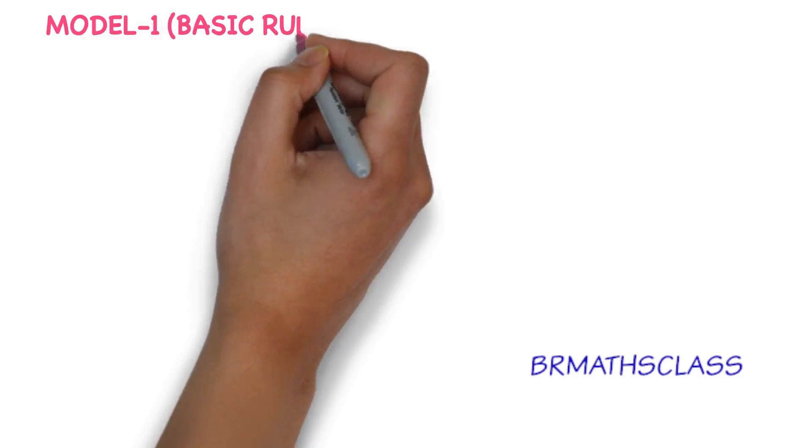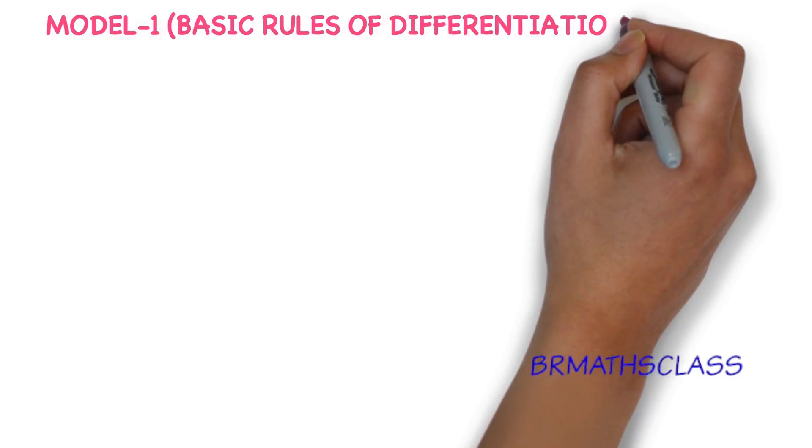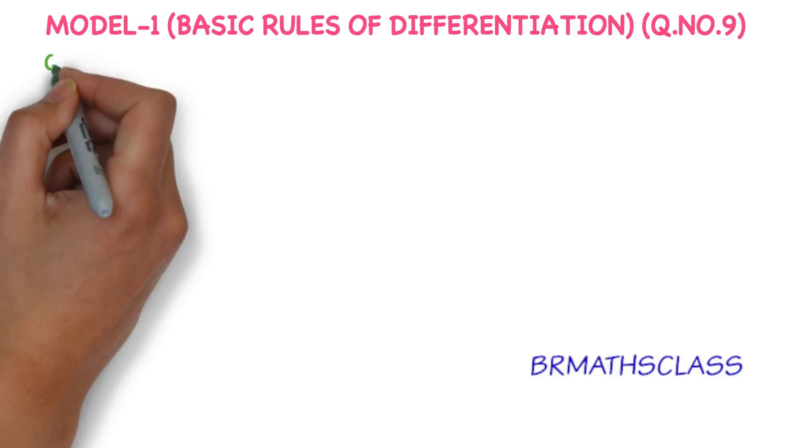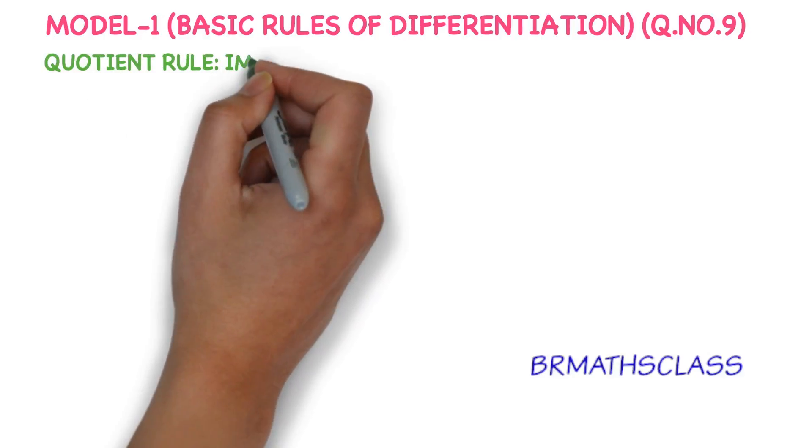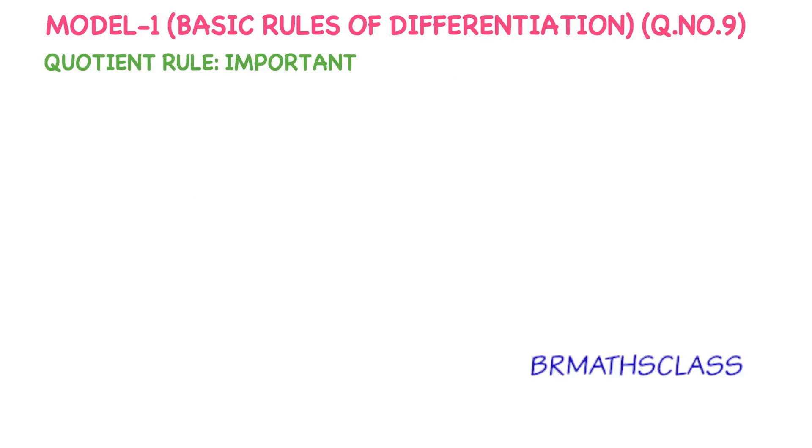Model 1: Basic rules of differentiation. In this question, we learn how to use quotient rule. Quotient rule is a formula which is very important and we use it very frequently throughout this differentiation chapter.